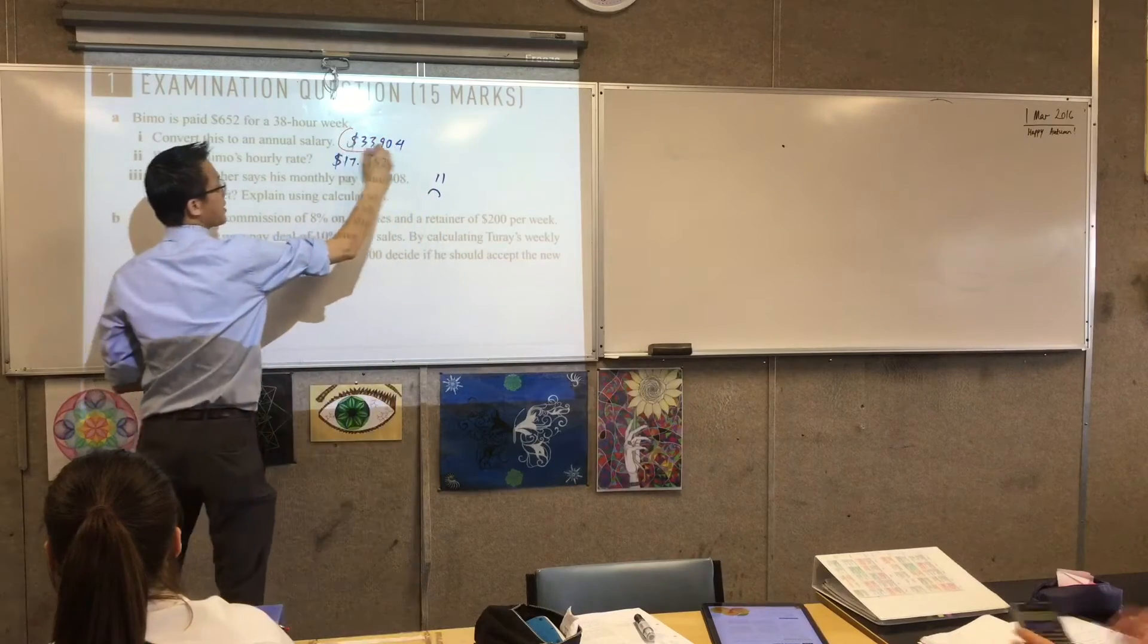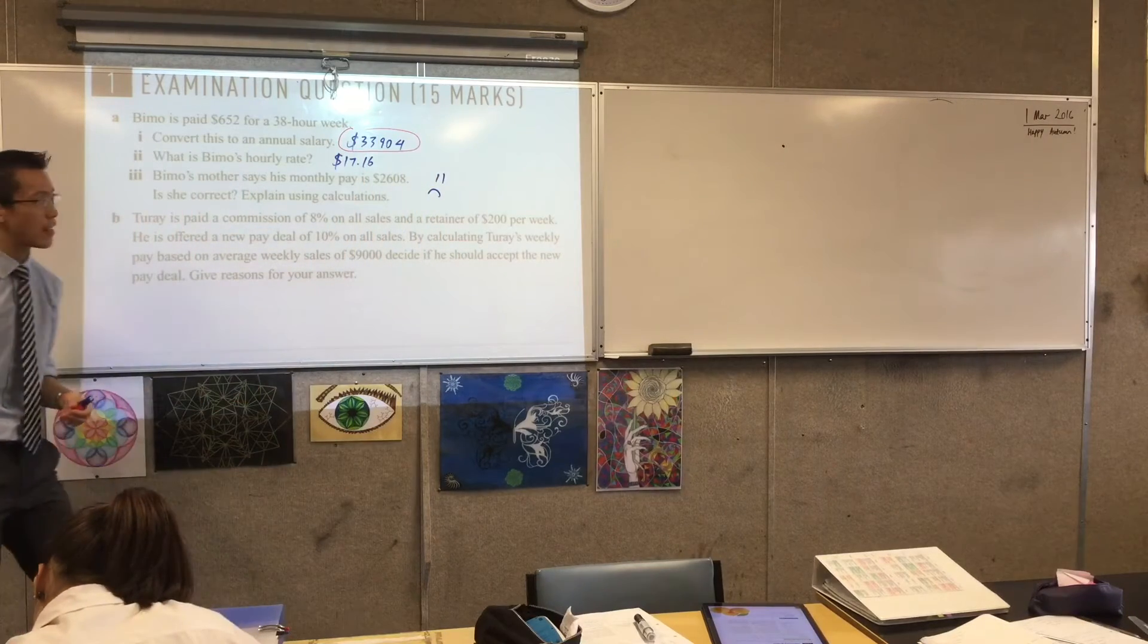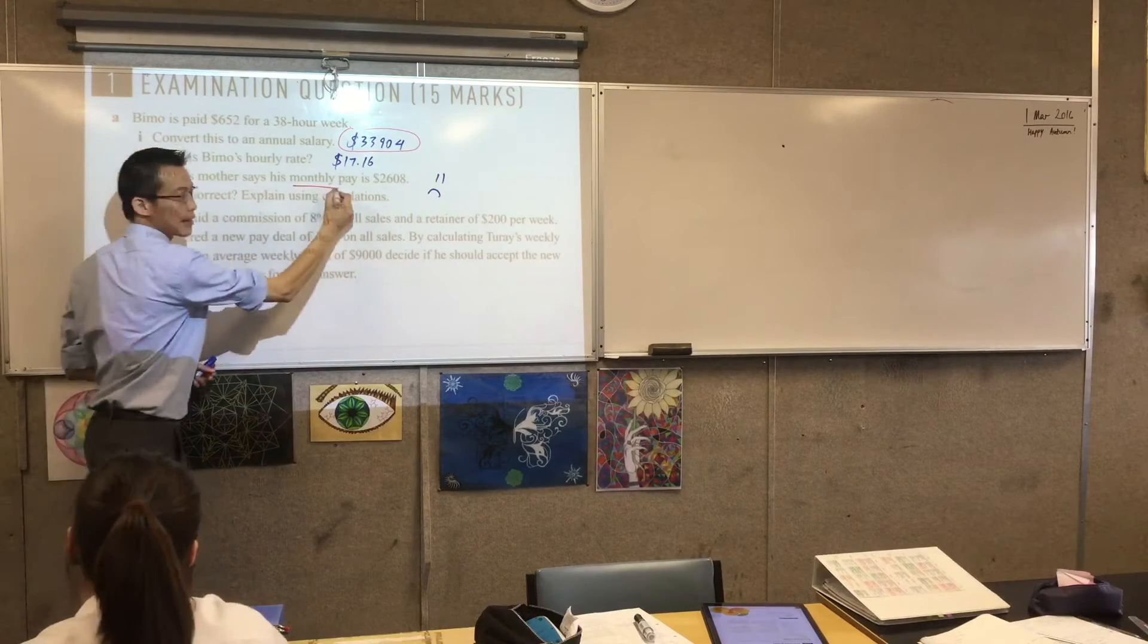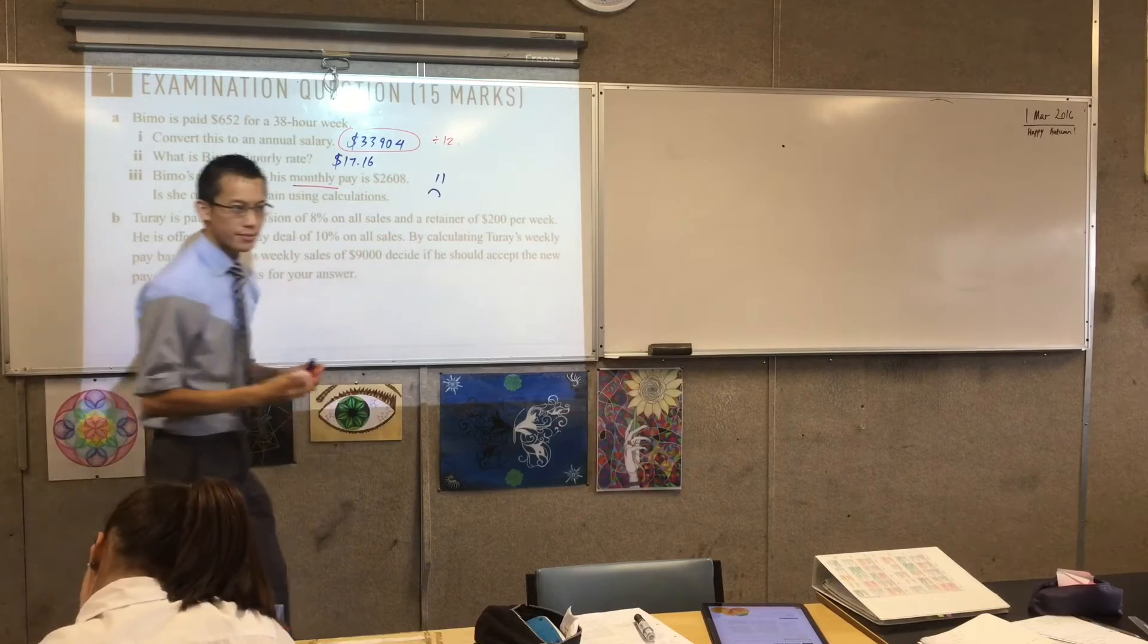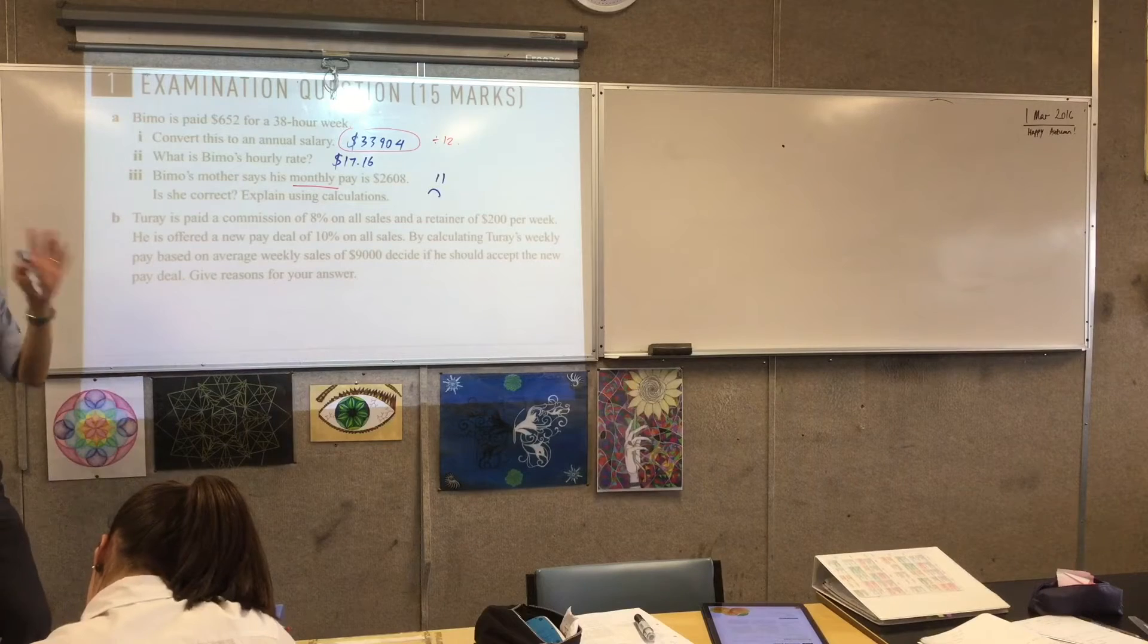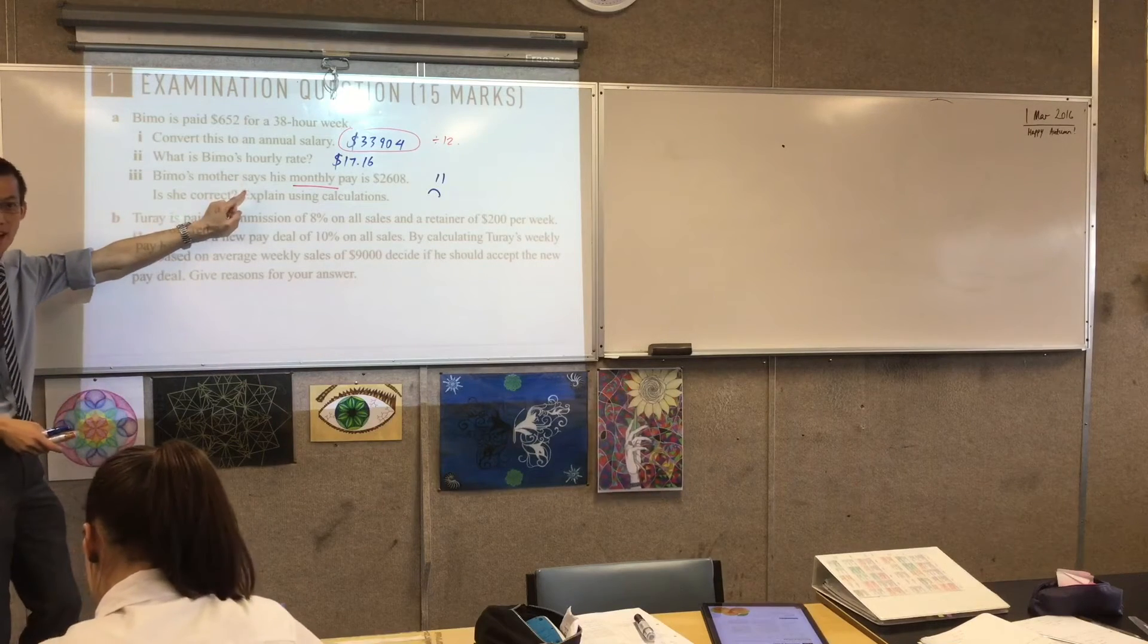So, you take this, which is the entire year, right? And because you want to go to monthly, you divide by 12. But so, why is that? I don't get why that's different to... Okay, this is a really interesting question. So, what has she actually done?